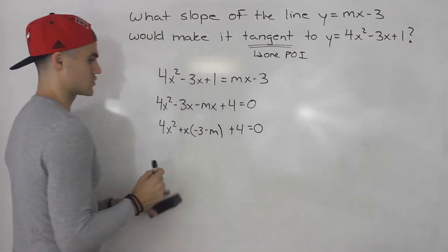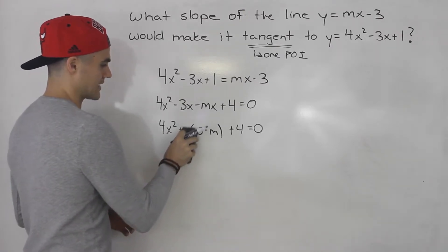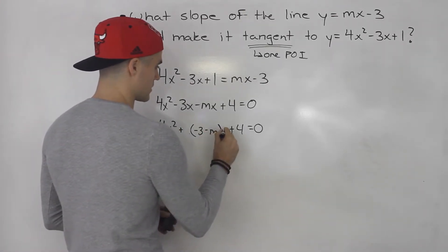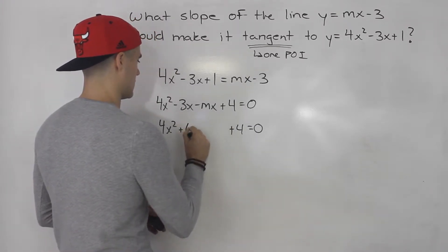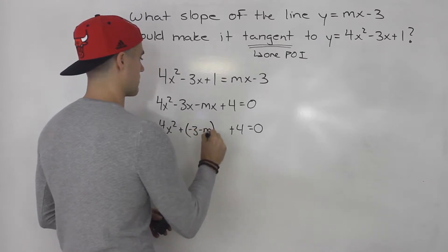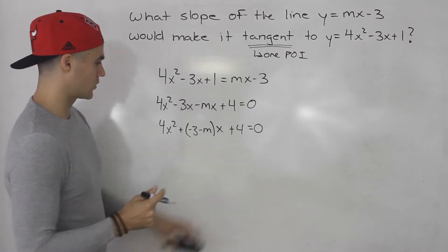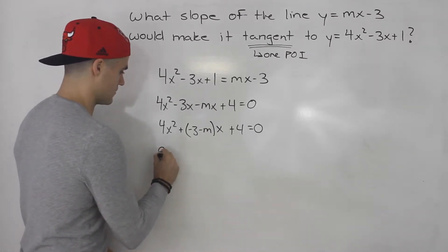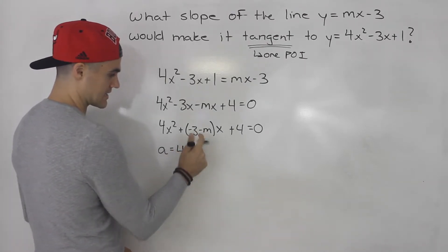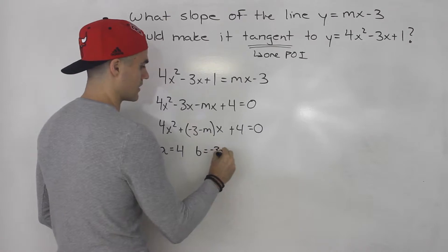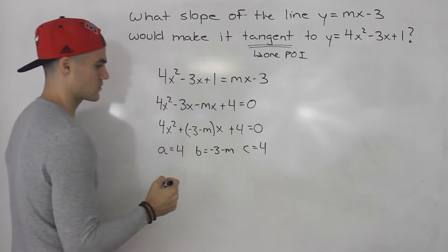We're just trying to get this into a quadratic type of form. So rewriting this: 4x squared plus (negative 3 minus m)x plus 4 equals 0. Notice this is a quadratic equation. The a value is 4, the b value is this entire expression — negative 3 minus m — and the c value is 4 as well.